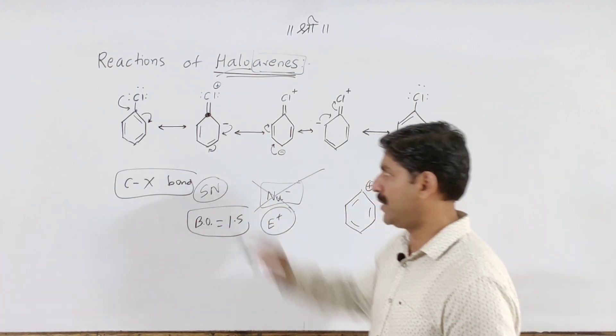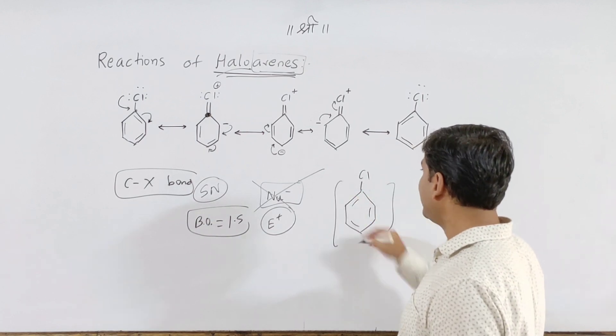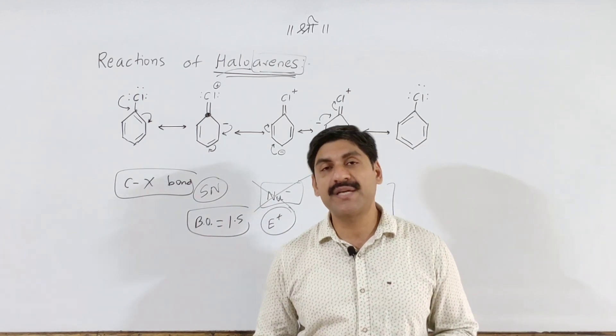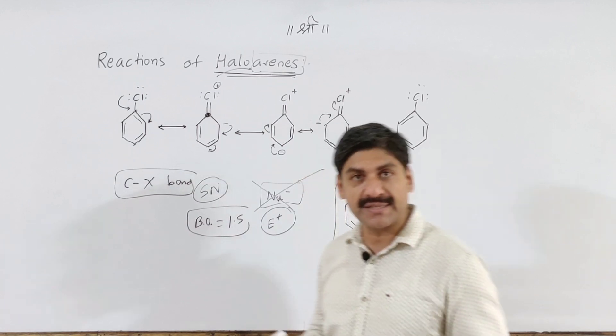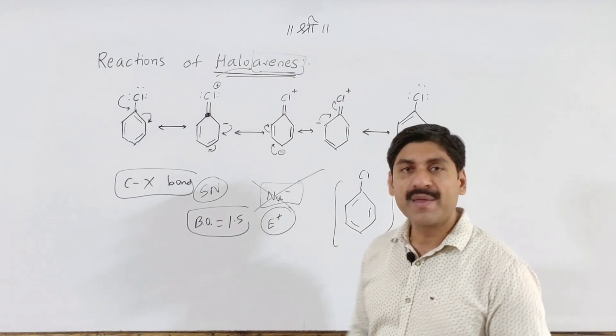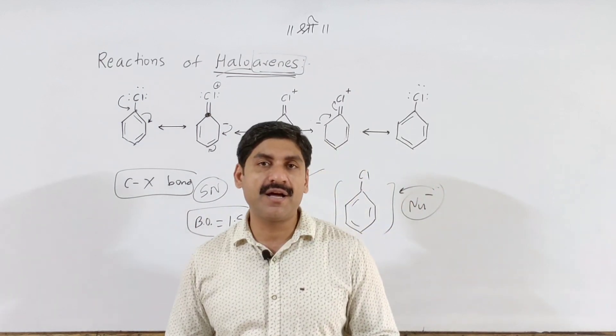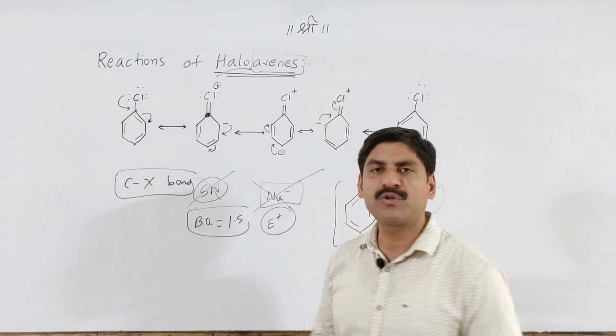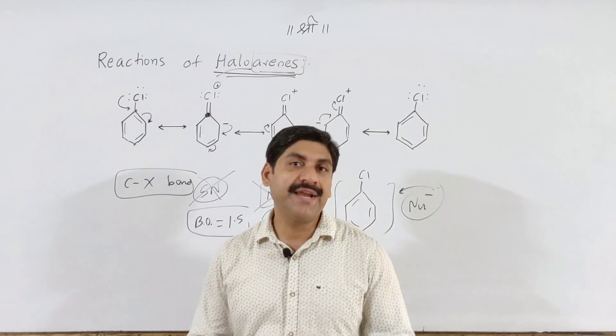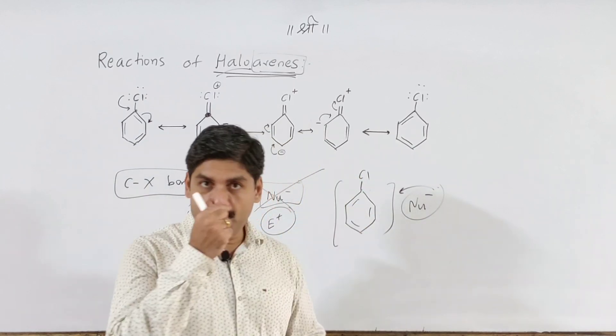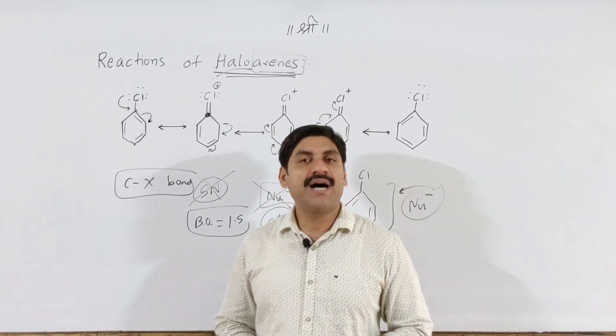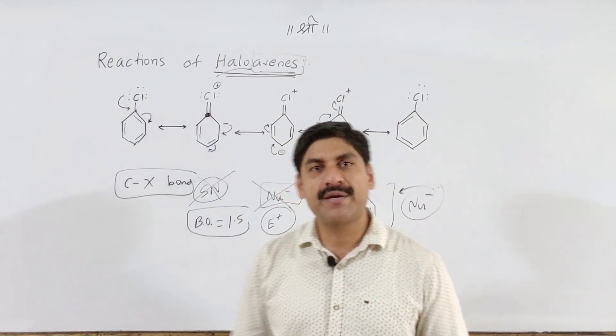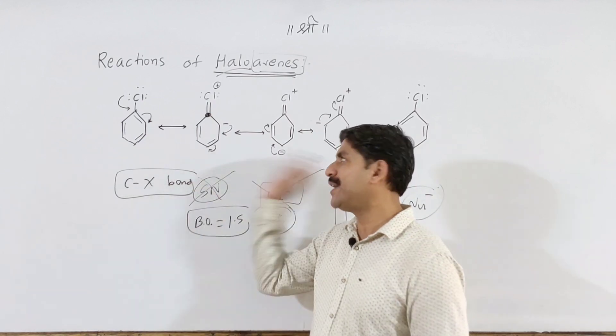Consider chlorobenzene - the benzene ring with chlorine. This is already electron rich. If another electron-rich nucleophile approaches, the reaction will not be favorable. So in normal cases, the reaction is not possible.